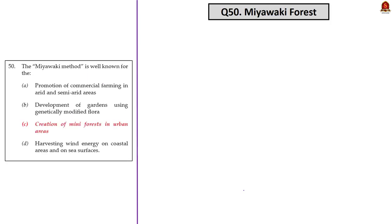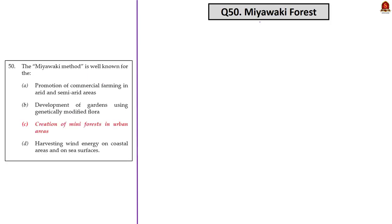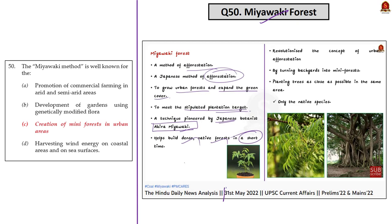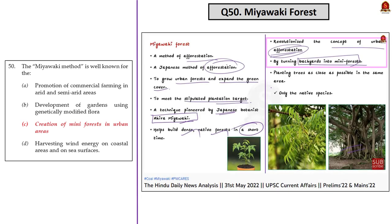Question 50 is about the Miyawaki method. Just a few days before the prelims examination — specifically on May 31st, 2022 — we discussed this topic. We mentioned that the aim of the Miyawaki method is to grow urban forests and expand green cover by afforestation. It has revolutionized urban afforestation as backyards have been turned into mini forests. So the correct answer is option C.